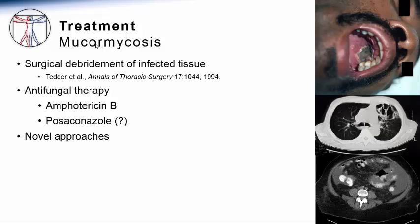The azole posaconazole has in vitro activity against some mucorales isolates, but it has not been demonstrated to be sufficiently active to serve as primary therapy in the face of active infection. Newer treatment strategies are also being envisioned, including trying to alter the iron availability to these fungi. These are treatments based on emerging basic research in this area; however, these strategies are only in early developmental stages.